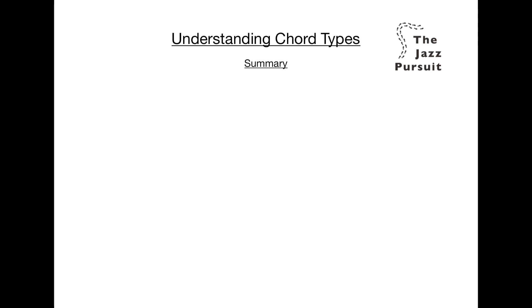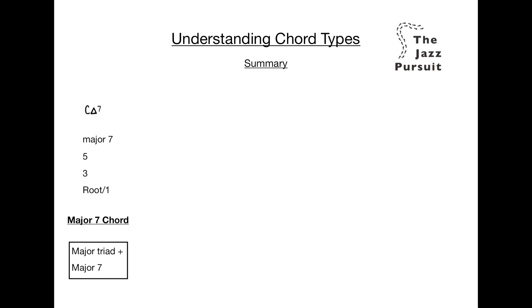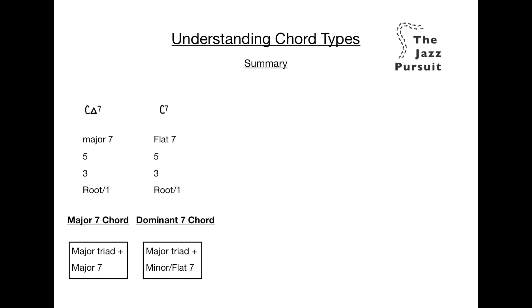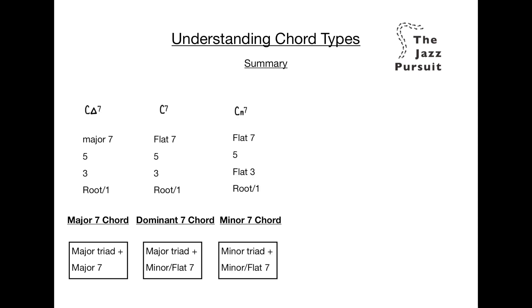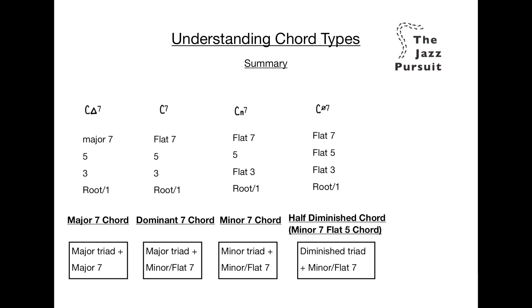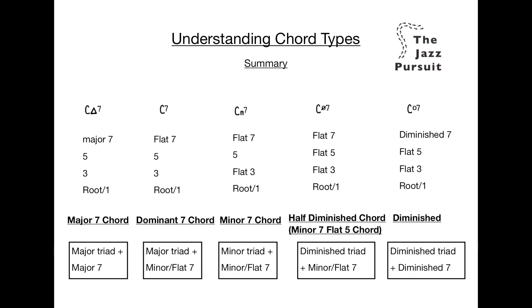Before we finish, let's have a quick overview of the different chord types we've covered. First, a major seven chord is made by a major triad and a major seventh — the symbol for this chord is often a triangle. Next, a dominant seven chord is made by a major triad and a flattened or minor seventh. Next is a minor seven chord, made by a minor triad — the root, flattened or minor third and the fifth — plus a minor or flattened seventh; the symbol for this is often a minus sign. Then we have a half diminished chord, also known as a minor seven flat five chord, made of the root, flattened third, flattened fifth and flattened seventh; the symbol is often a circle with a line through it. Finally, a diminished chord is made of the root, flattened third, flattened fifth and doubly flattened seventh, creating a stack of minor third intervals; the symbol is just a circle.